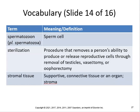Spermatozoa are simply sperm cells. Sterilization removes a person's ability to produce or release reproductive cells through procedures like removal of the testicles, vasectomy, or oophorectomy. Stromal tissue is the supportive connective tissue of an organ. With a vasectomy, a man does not lose testosterone or sexual desire — the sperm simply cannot leave the body. He still produces ejaculatory fluid from the prostate and seminal vesicles; he's essentially shooting blanks.